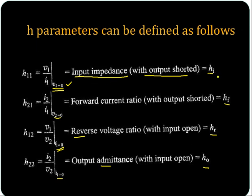So: HI for input impedance, HF for forward current ratio, HR for reverse voltage ratio V1 by V2 with input open, and H22 equal to I2 by V2 is output admittance with input open — that is H0.